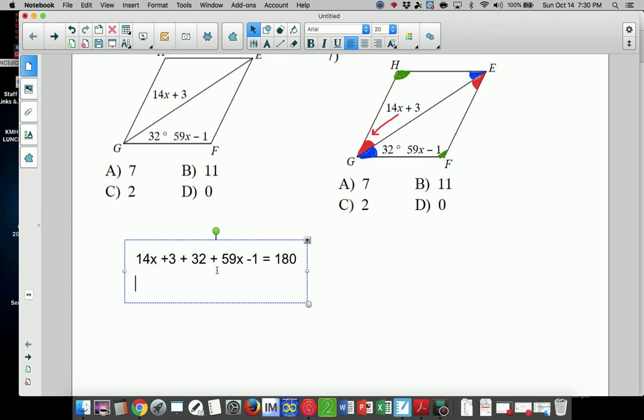I get 14x plus 59x, which is 73x, plus I get 32 plus 3, which is 35 minus 1, plus 34 equals 180. Let's minus 34 from each side.